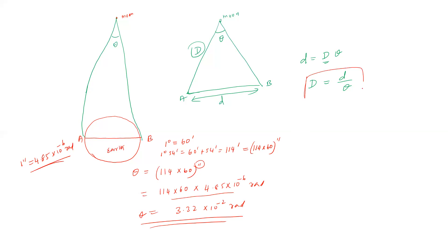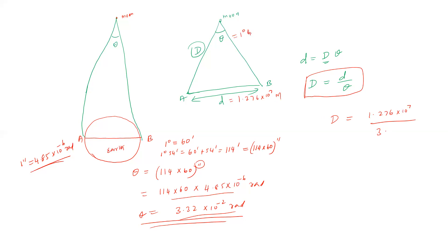The result is 1.276×10⁷ divided by 3.32×10⁻² radian, where 1.276×10⁷ is the diameter of the Earth. So 1 degree equals 60 minutes, and 1 degree 54 minutes is confirmed.